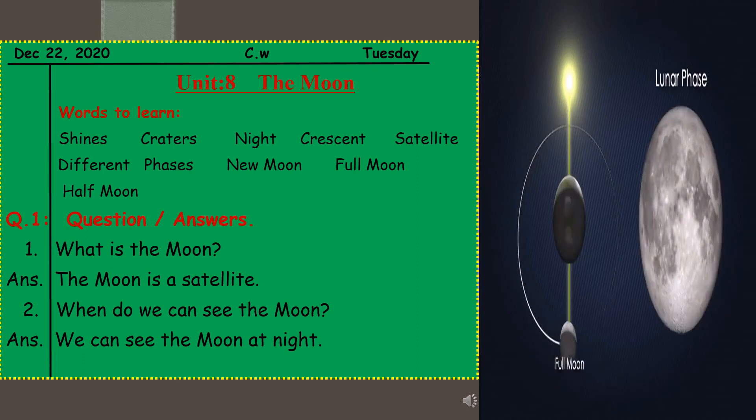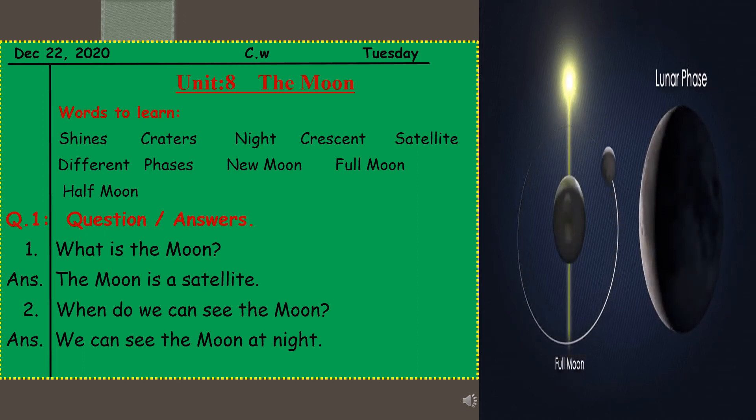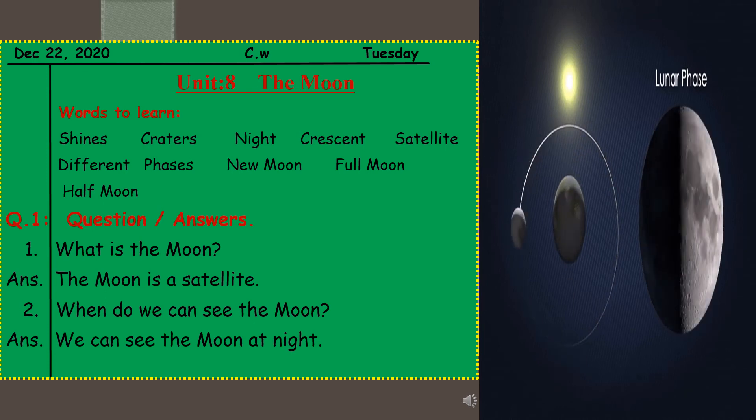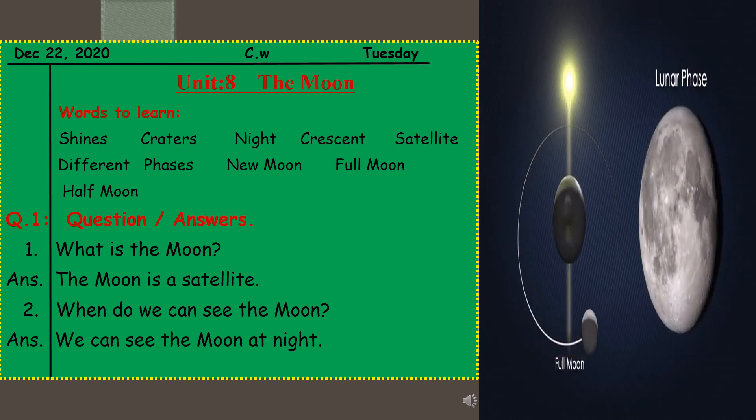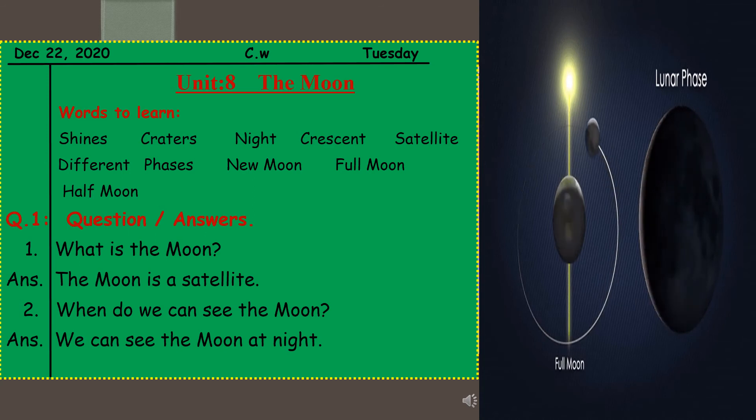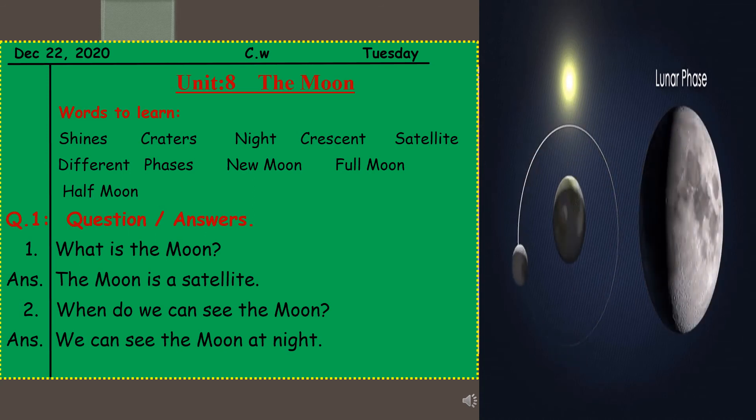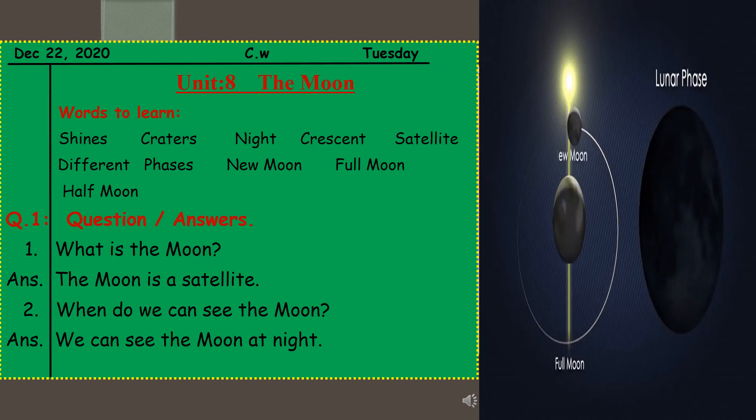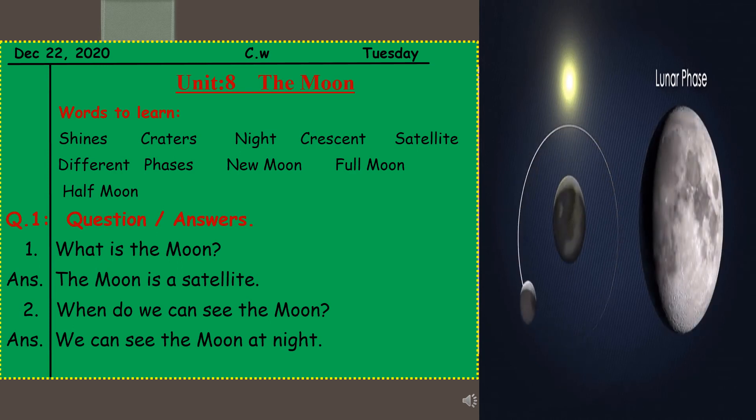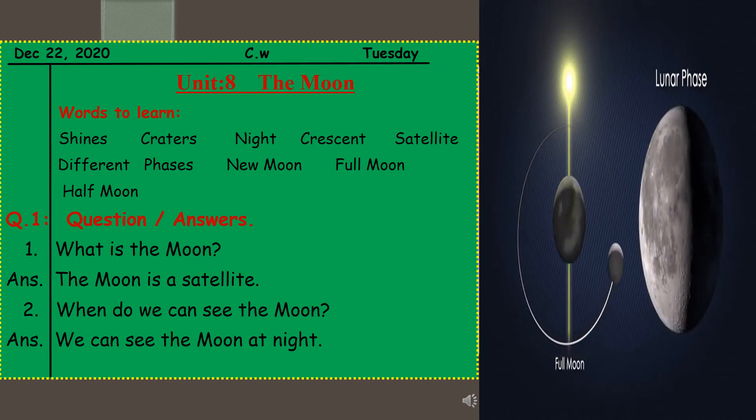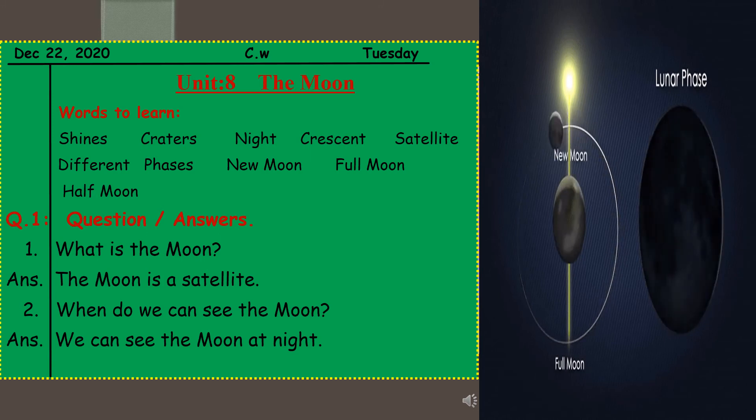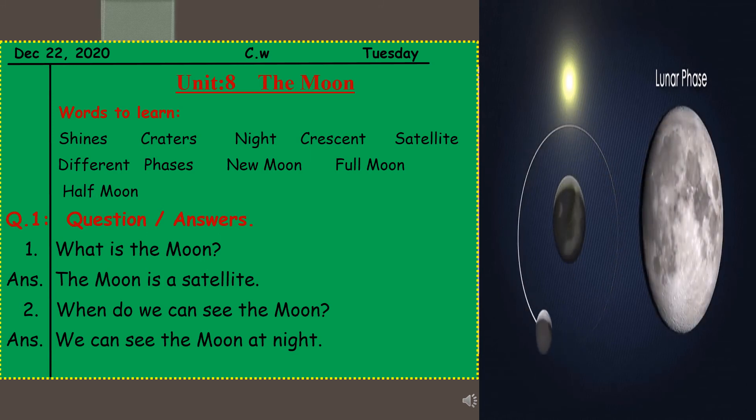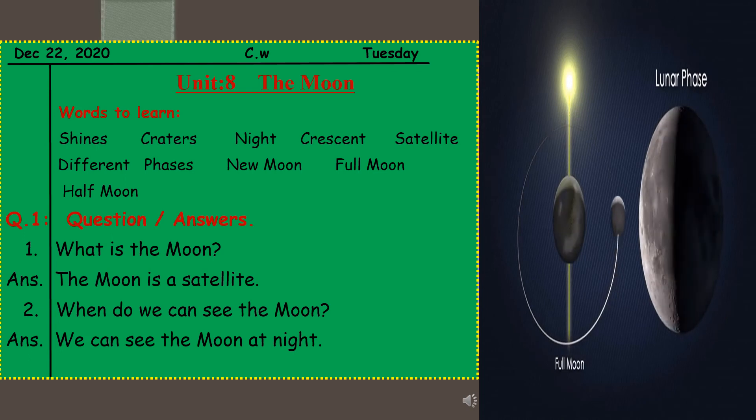After writing these words, on the next page again you have to draw margin line, you have to write the date, today's date, day, and your question number one is question answers. And we are going to do five questions of these question answers. So today we are going to do question number one and two only. So let's start.